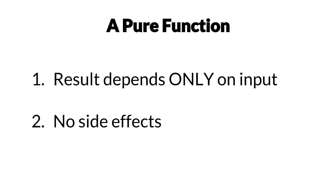For a function to be pure, it has to meet two requirements. First of all, the result can depend only on the input given to it, so it can't depend on any kind of external state. Secondly, there can be no side effects. This means that we can't be modifying any state or interacting with a database or anything like that.